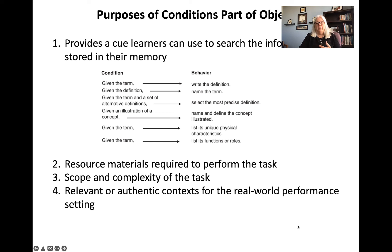The fourth purpose is to aid in the transfer of training and transfer of knowledge. The more relevant or authentic the context is for the real-world performance setting, the more likely we'll have a transfer of training. So the more I can make the learning context like the performance context in the real world, the more likely I am to have this transfer of training.